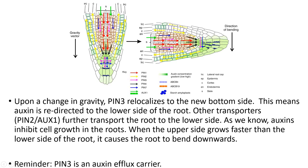PIN3, as we remember, allows auxin to pass through it. So the PIN3 transporter is on this side, and it means all the auxin travels from here downwards in this direction. This means all the auxin localizes on the lower side of the root. And as we know from secondary school, auxin inhibits cell growth in the roots. So the upper side of the root grows faster, and it causes the root to bend downwards. And that's how the roots of plants detect gravity.